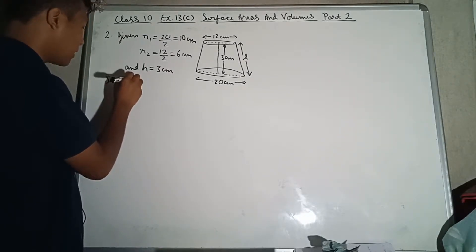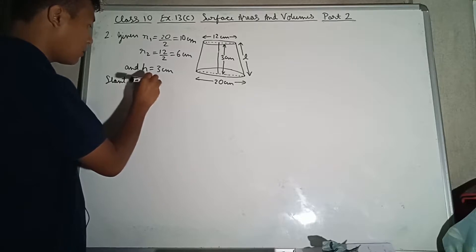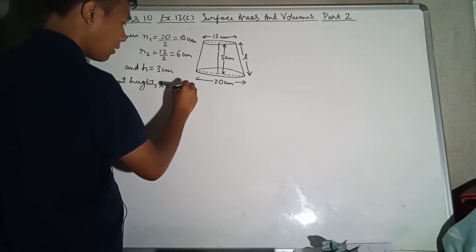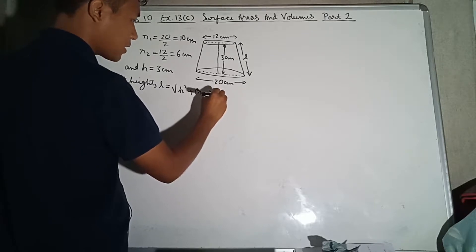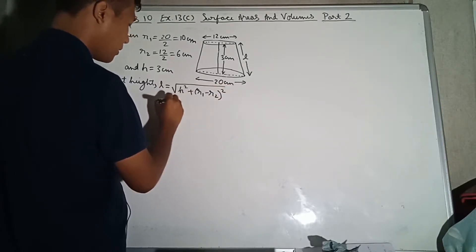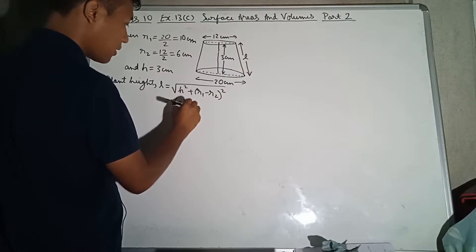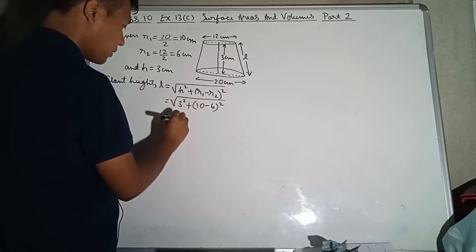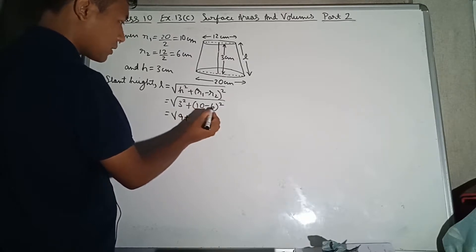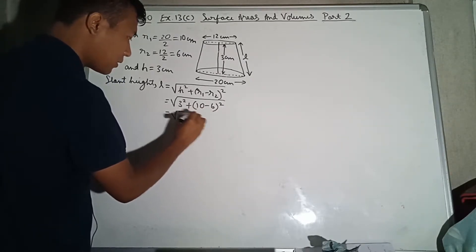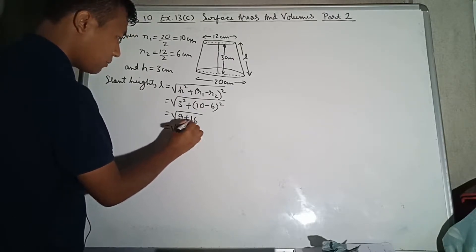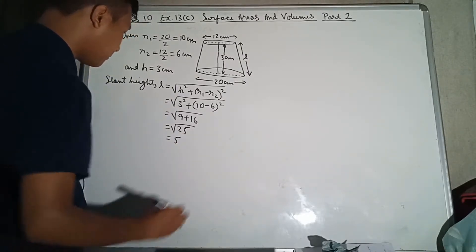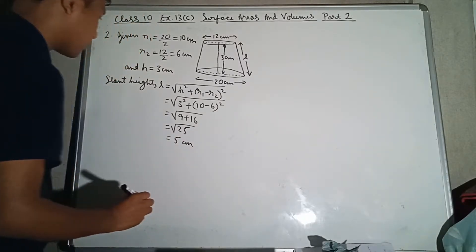Now let me calculate slant height. L is equal to root of H squared plus (R1 minus R2) whole square. This is equal to root of 3 squared plus (10 minus 6) whole square, which equals root of 9 plus 16 equals root of 25, which equals 5 centimeters. So this slant height is 5 centimeters.